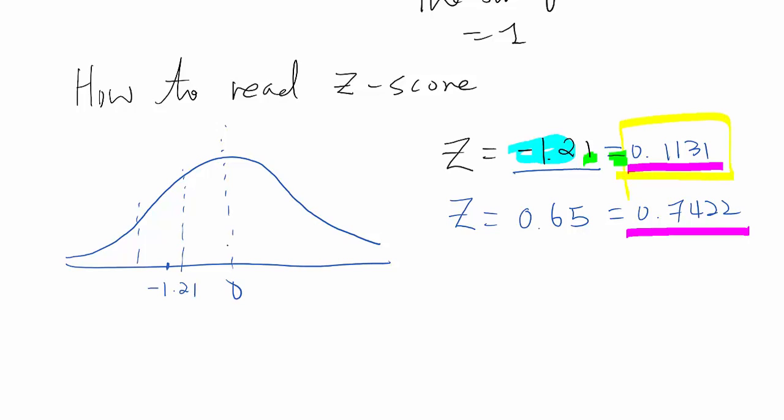Which means basically a cumulative area from left end until the z-score. That area value equals 0.1131, which means the cumulative probability value until z-score equal to negative 1.21 equals 0.1131, or in other words, 11.31 percentile.